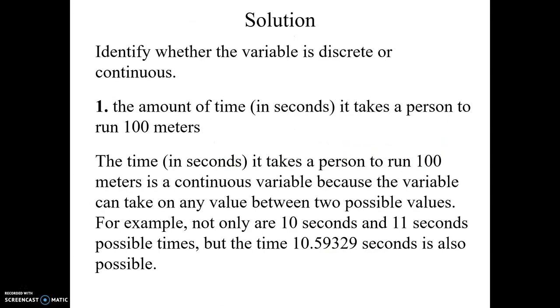Here's the answer written out. The time in seconds it takes a person to run the 100 is a continuous variable because a variable can take on any value, decimal or otherwise, between two possible values. For example, not only are 10 and 11 seconds possible times, but you can also have 10.59329. So whenever decimals are possible, it is continuous.